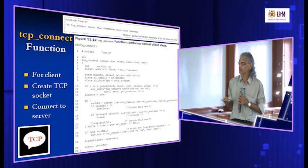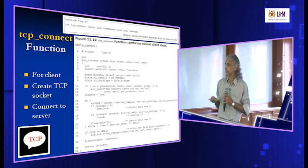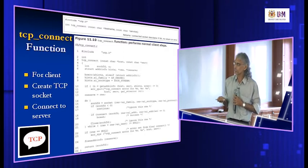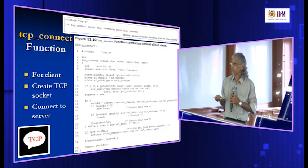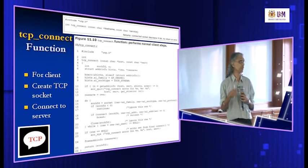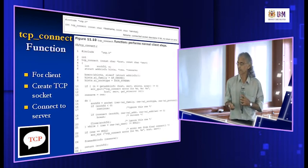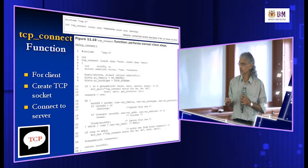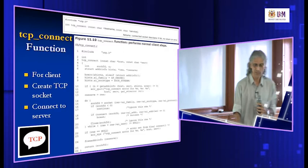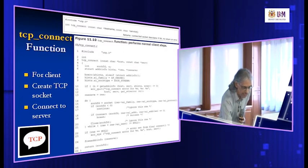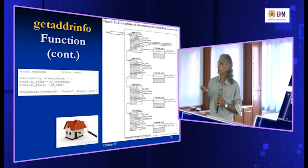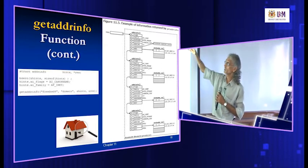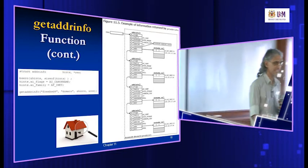After calling getAddressInfo, we get back socket structures. We go through them one by one — for each one, we create a socket and try to connect. The do loop handles all the returned values. We call the socket function using the family type, socket type, and protocol from the result structure. If socket creation is successful, we try to connect to the address from the result structure, providing the length of the socket structure as usual. If the connect works, we break out of the loop.